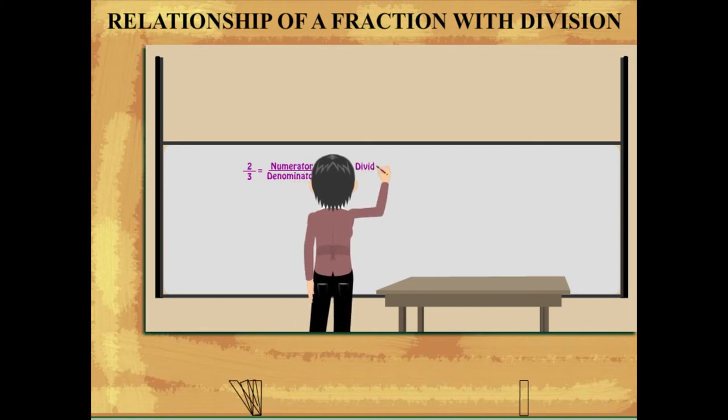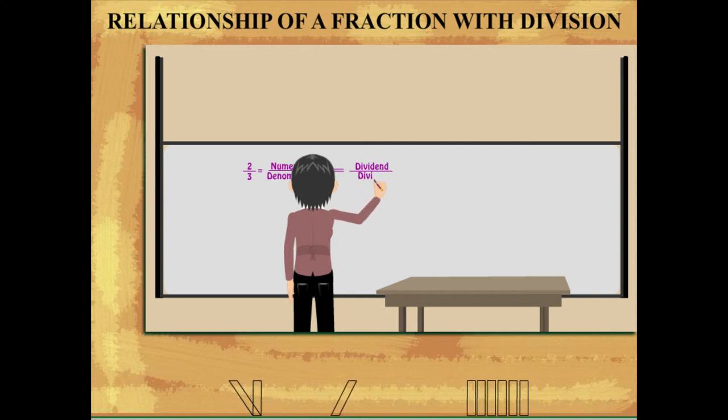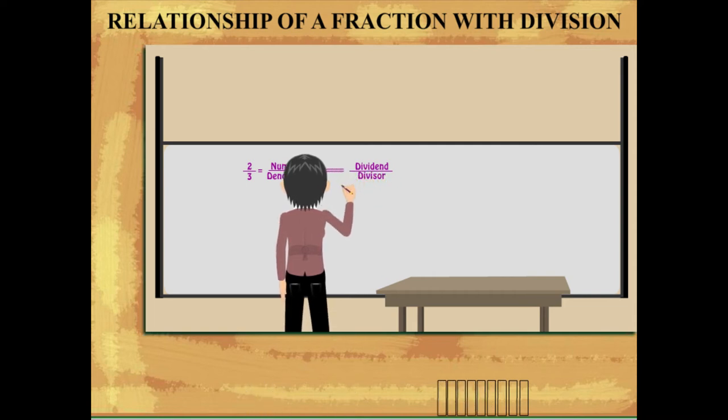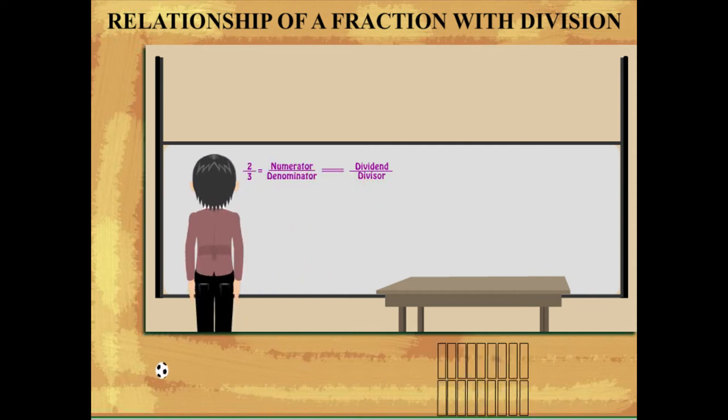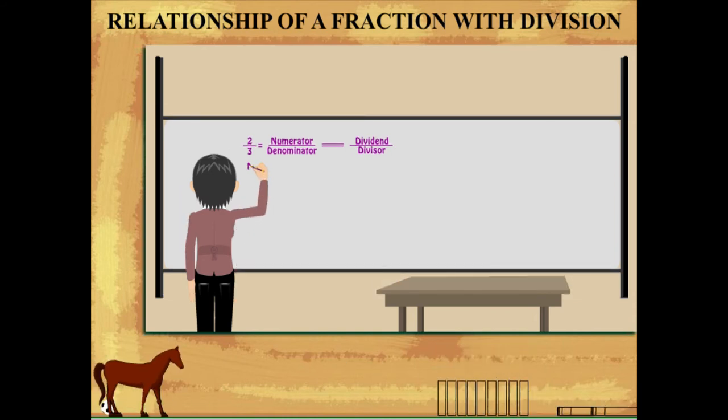In terms of division, the number on top is the dividend and the number below is the divisor. This means that for 2 upon 3, the numerator is equal to the dividend that is 2.